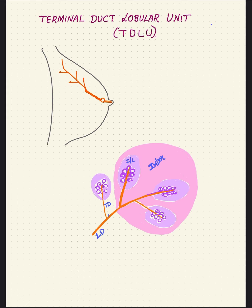Before starting this topic, I would like to give a brief introduction about the anatomy of breast, about the terminal duct lobular unit. This is the nipple areola complex, which contains the lactiferous duct and the lactiferous sinus. This lactiferous duct going posteriorly into the parenchyma or the stroma into the tissue of the breast branches into segmental, subsegmental, and ultimately into terminal ducts.